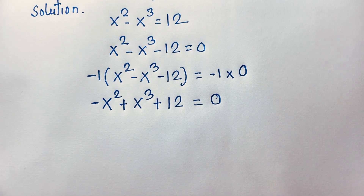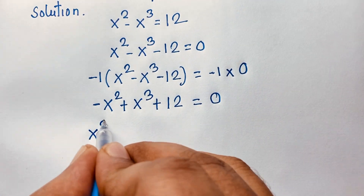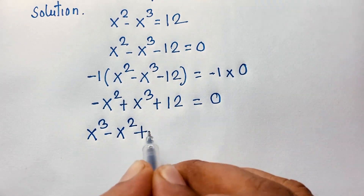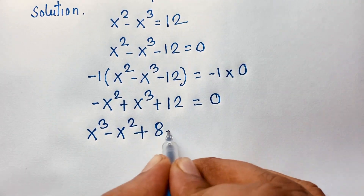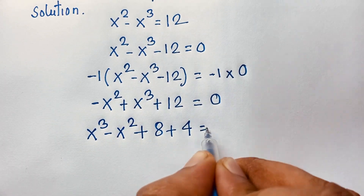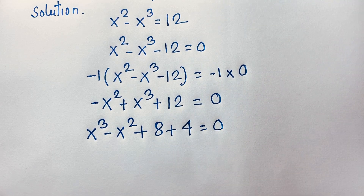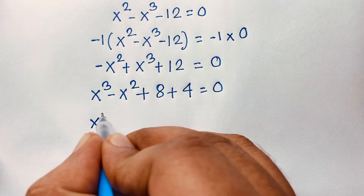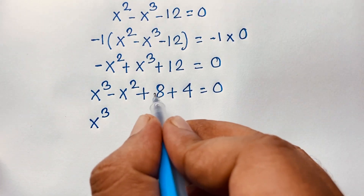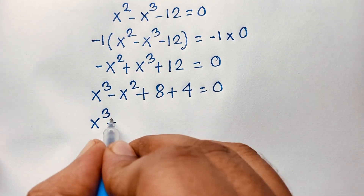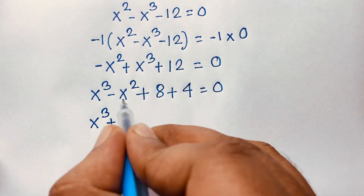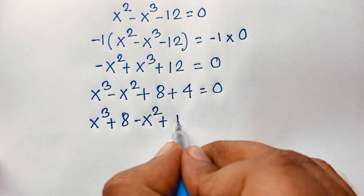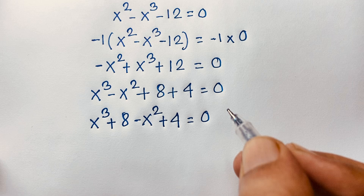This cubic equation will be x to the power 3 minus x squared, and this 12 can be written as 8 plus 4 — since 8 plus 4 is 12. So I can group it as x to the power 3 plus 8, then take negative x squared plus 4 is equal to 0.